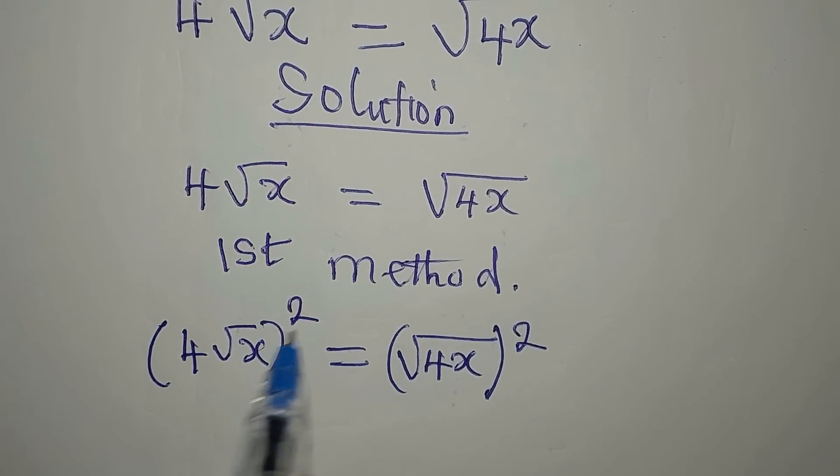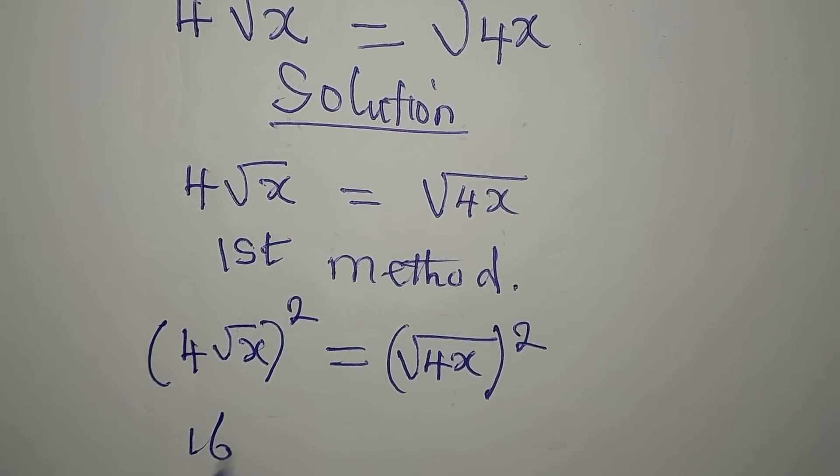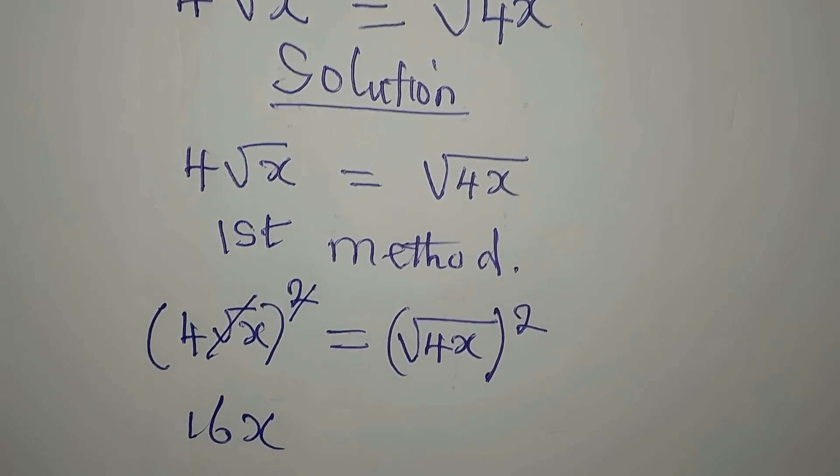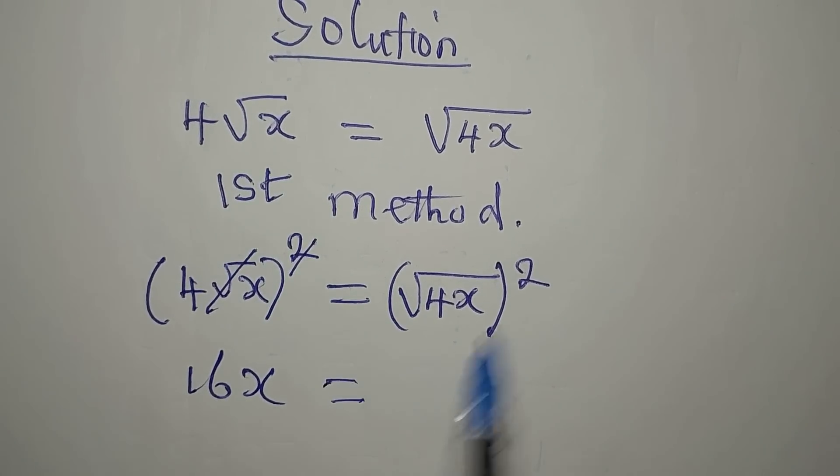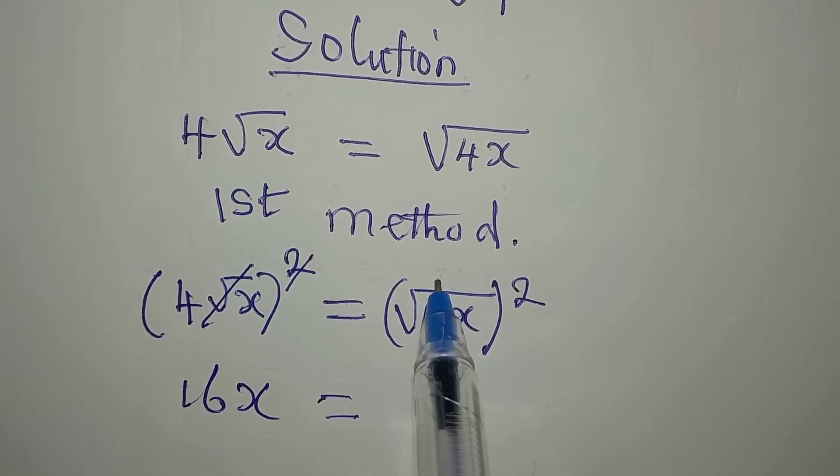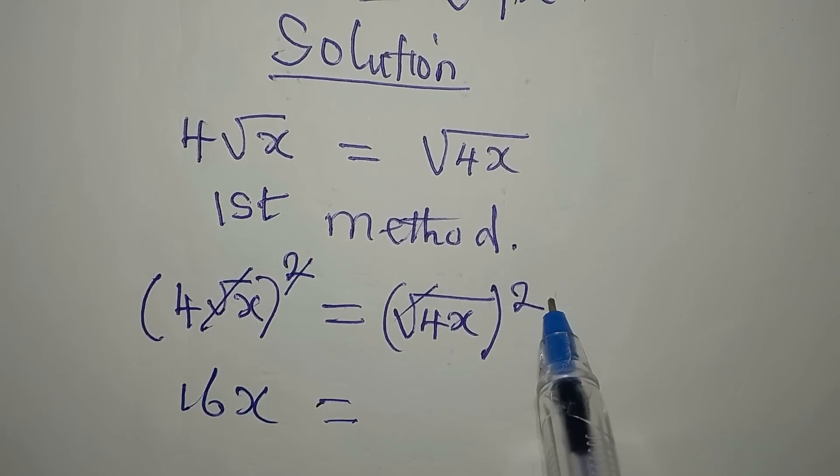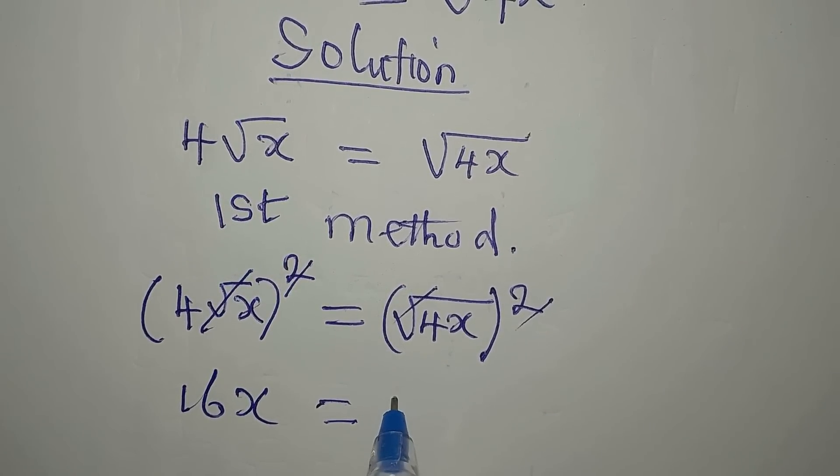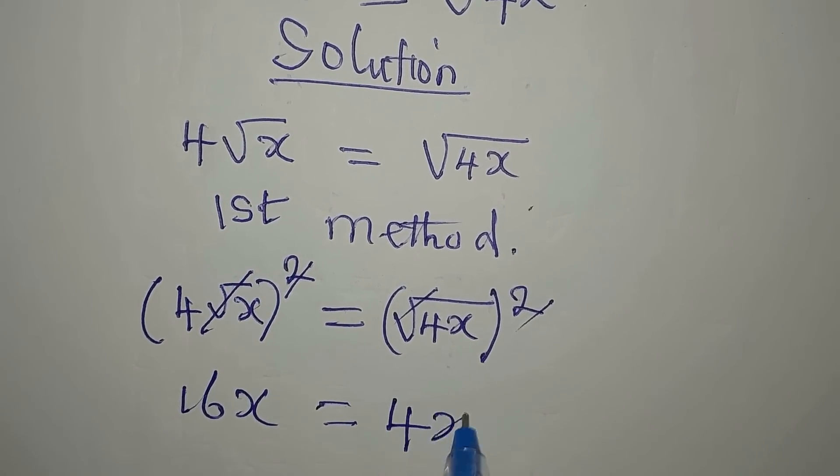Now, 4 squared is 16. Then this will go with this, so we multiply 16 by x. On the other side, this will go with this, and now we are having 4x on that side.